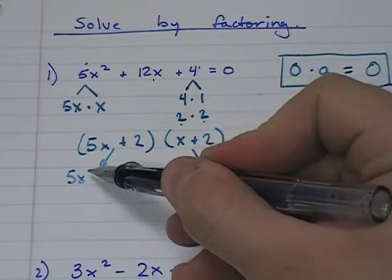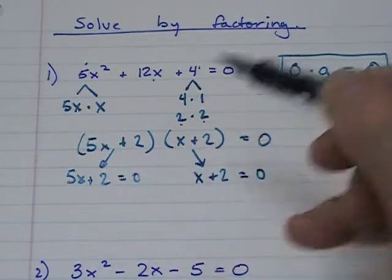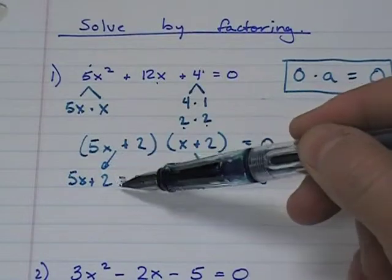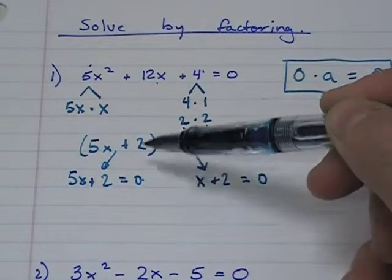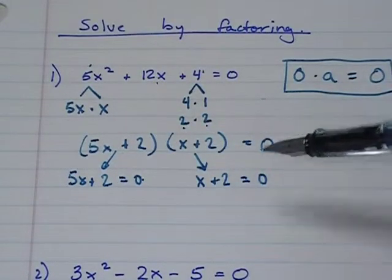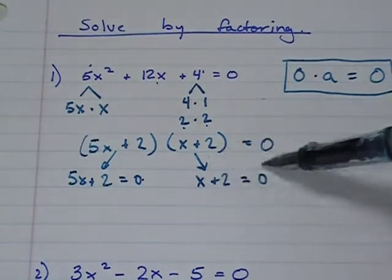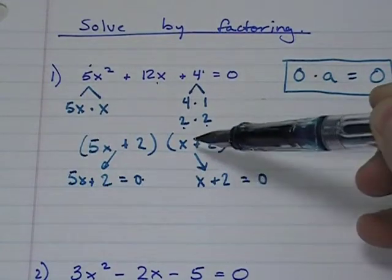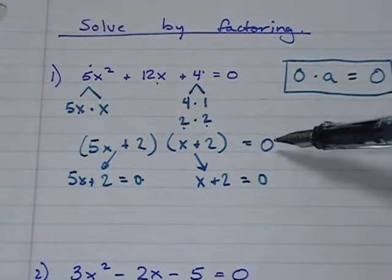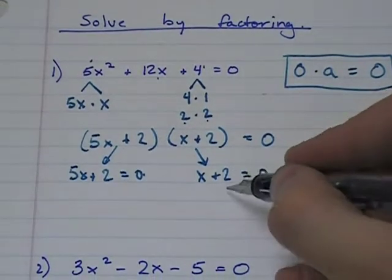So 5x plus 2 equals zero. Now, whatever number will make this statement true, zero times anything equals zero. Whatever number makes this statement true, zero times anything equals zero.